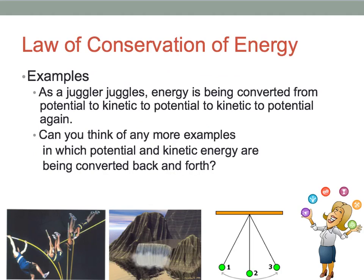As an example, think about juggling. As jugglers juggle balls, the energy is being converted from potential to kinetic back and forth over and over again. As the ball goes up in the air, it moves to a point where it converts all the way to potential — the highest point — because it's then going to fall and turn into kinetic energy. When you catch it, you stop the motion and it's potential again. Then you release the ball and it becomes kinetic.